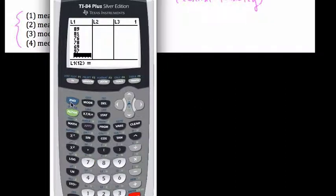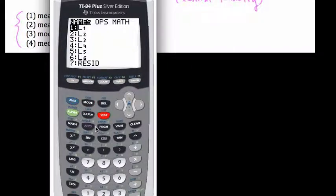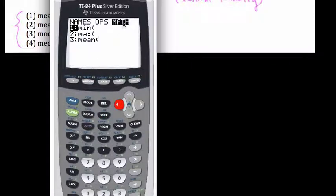Now, once that list is done, I quit out of here. That saves automatically, so I hit second quit. And now, I just hit second stat. So, before we hit the stat button, now we hit second stat. Scroll over to the math category, and there we have the mean and the median.